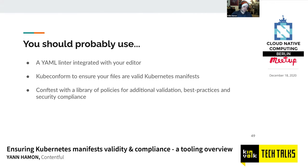That's our final manifest with all mistakes highlighted and the tools used to find them: YAML errors, policy errors caught with conftest, kubectl dry-run client and server mode, and the cross-file conftest rule for the selector. My recommendations: use a good YAML linter integrated with your editor; use kubeval or KubeConform to ensure files are valid Kubernetes manifests; and use conftest with a library of policies for additional validation, best practices, and security compliance — a library of policies as code that you build up over time.